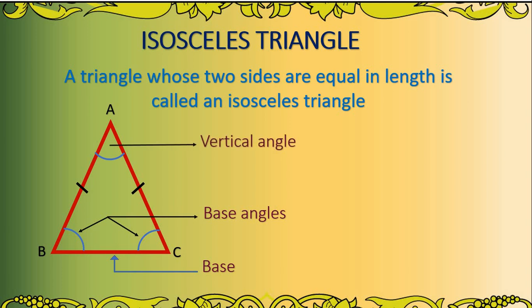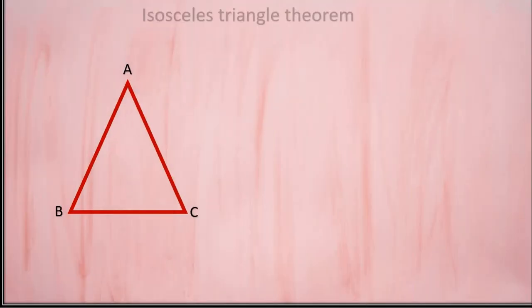Now let us understand the isosceles triangle theorem. It tells us that if side AB equals AC, then the measure of angle C will also be equal to the measure of angle B.